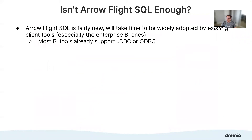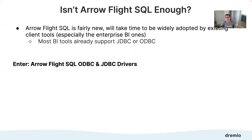So isn't that enough? Aren't we done yet? The short answer is it would be nice. But the reality is that Arrow Flight SQL is fairly new and it's going to take time to be widely adopted by existing client tools — especially if you look at the enterprise BI tools, where the development pace is generally slower, the release cadence is slower, and their desire to adopt new things is also generally slower. But the nice thing is that most BI tools already support ODBC and JDBC. So can we give them something to make them work in the meantime while they work on adopting it natively? That's really where Arrow Flight SQL ODBC and JDBC drivers come in — that's the problem they're set up to solve.